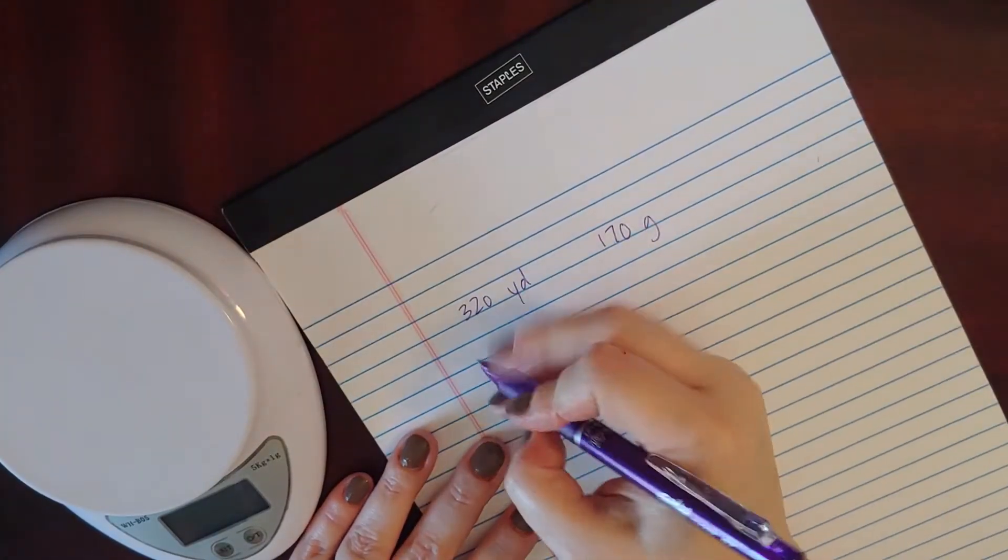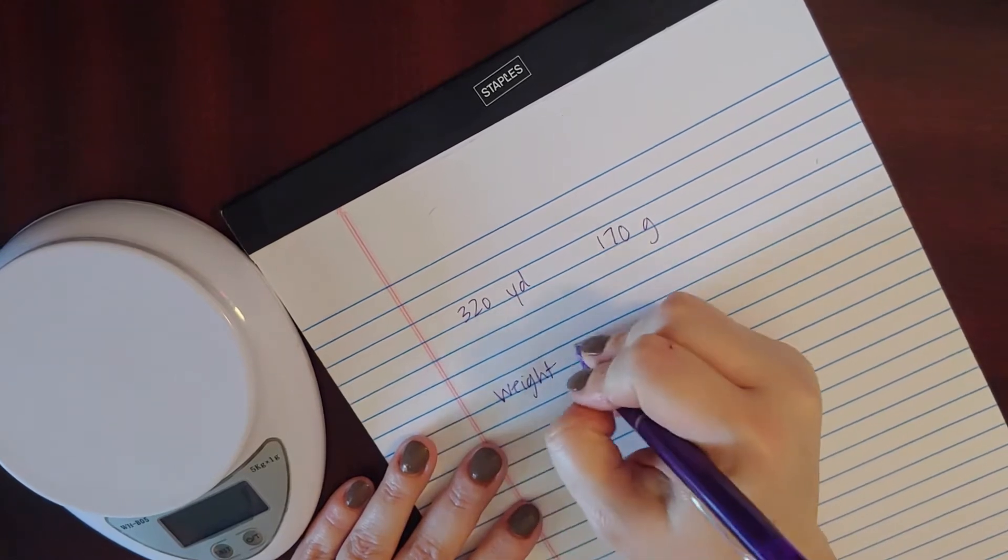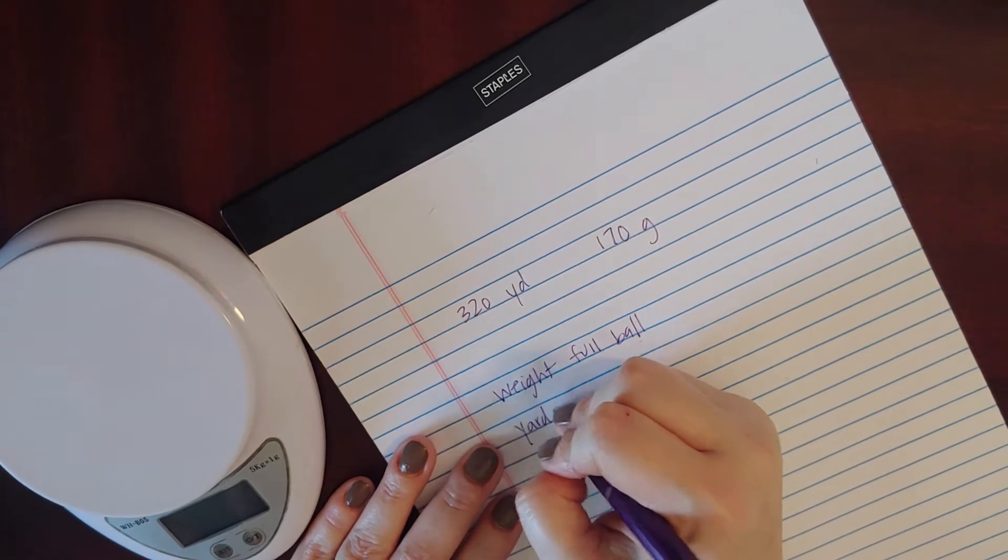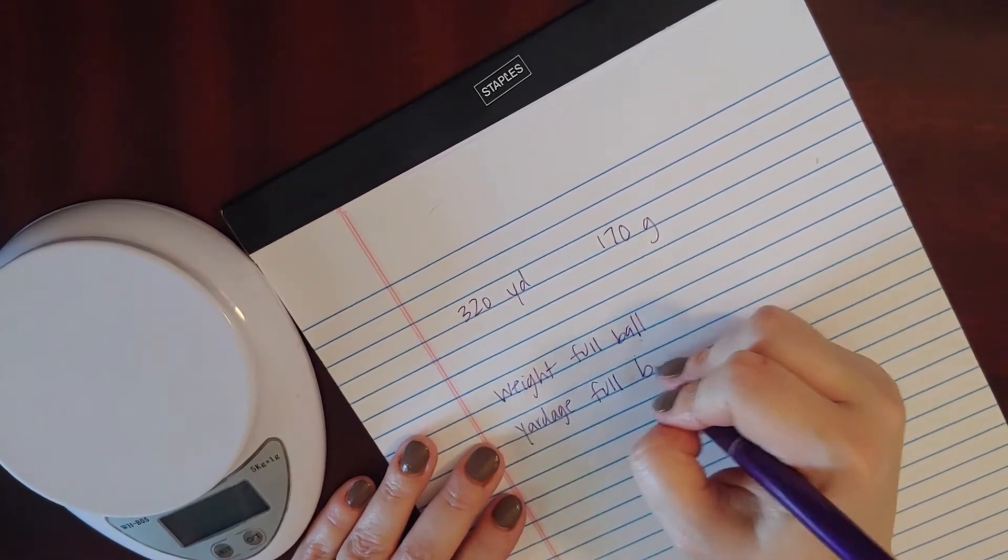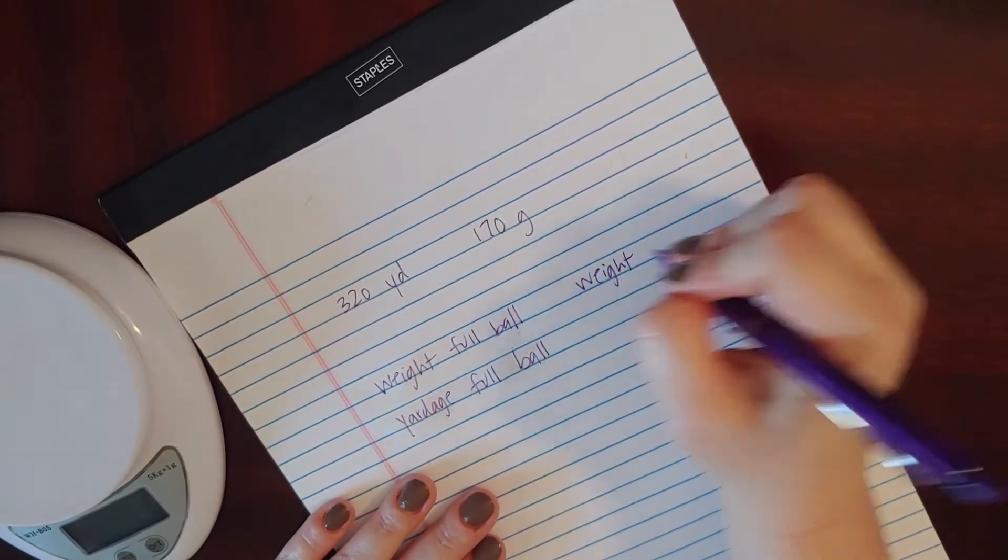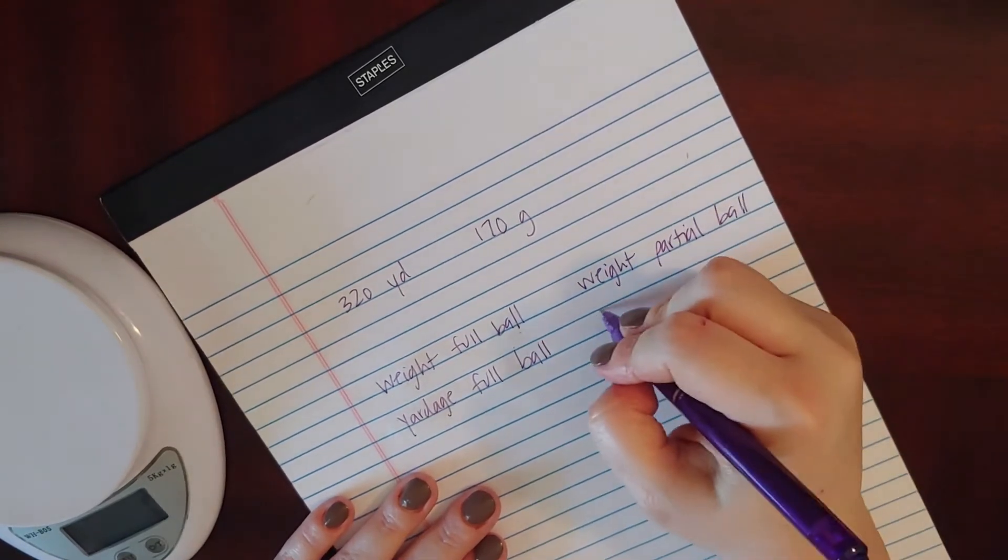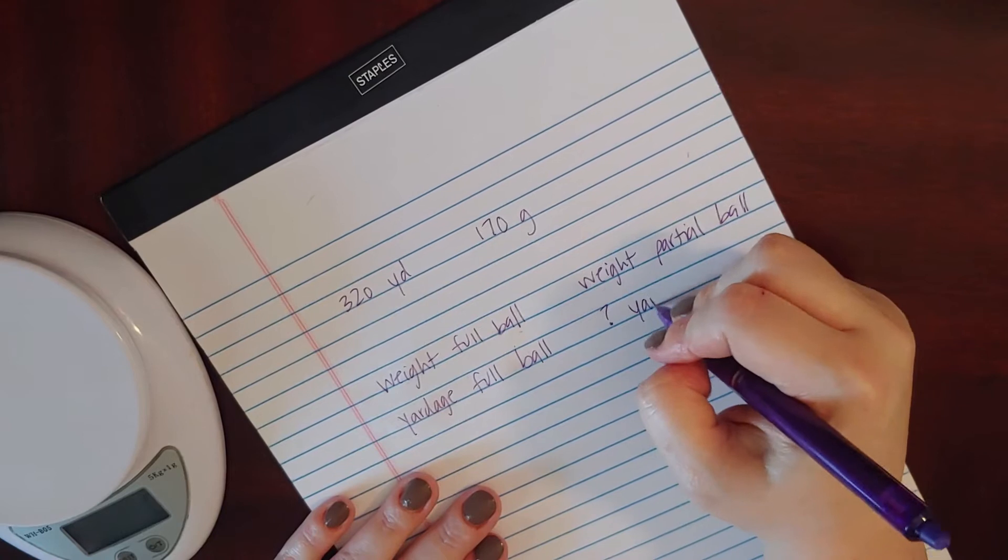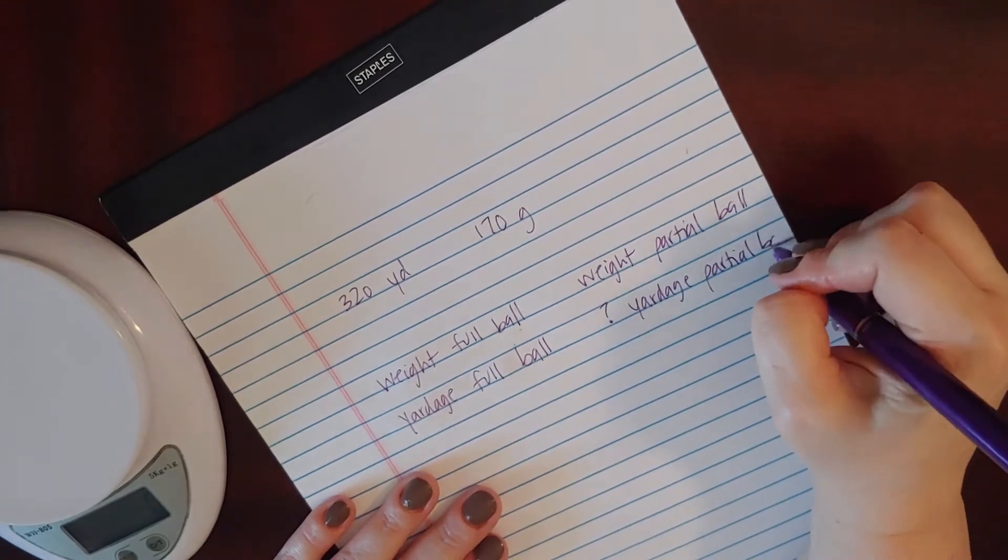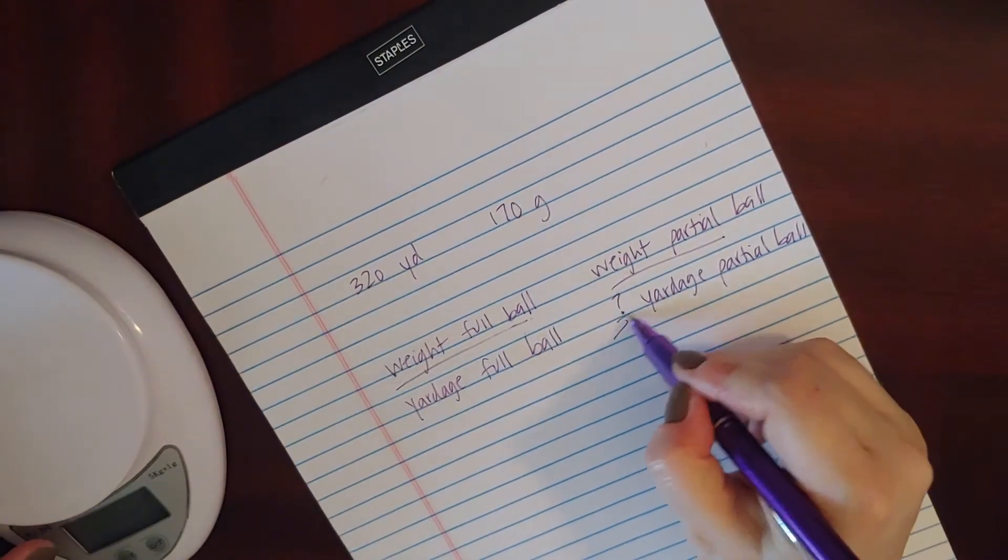So the information you're going to have is the weight of the full ball of yarn, the yardage of the full ball of yarn, and the weight of the partial ball. What you're not going to have - the question mark - is the yardage of the partial ball. There's a simple two-step math problem that you can do to figure out this information.